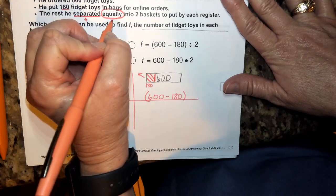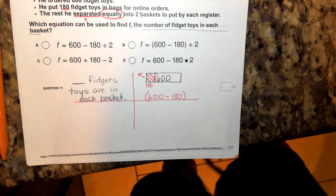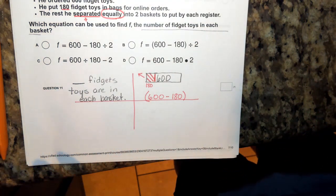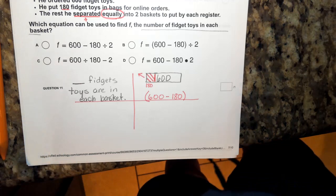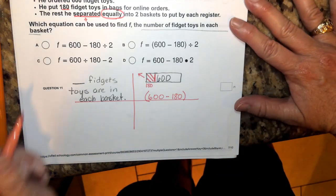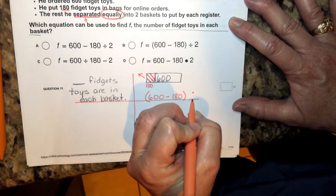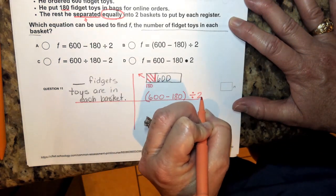And equally confirms it because we want equal groups. So anytime we're talking about equal groups, we want to think about dividing. All right. And so we're going to take what's left over and we're going to divide that by two.